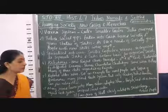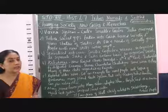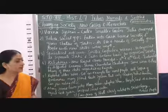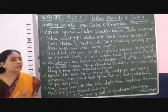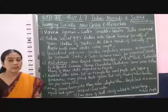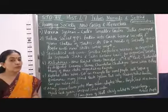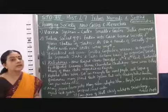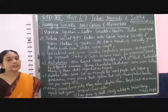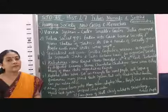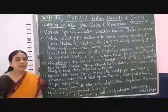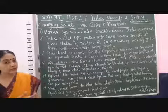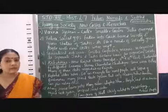Many of the big tribal societies converted themselves into large states, so an emergence of large states among tribal groups occurred. We will study about two such states: one is the Gond Kingdom and one is the Ahom Kingdom. We will study about that in the next video.